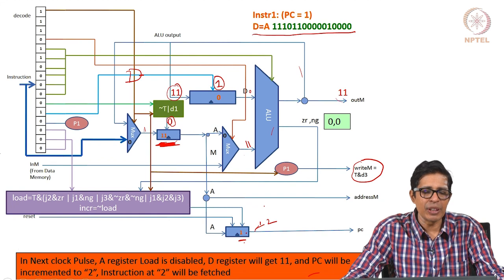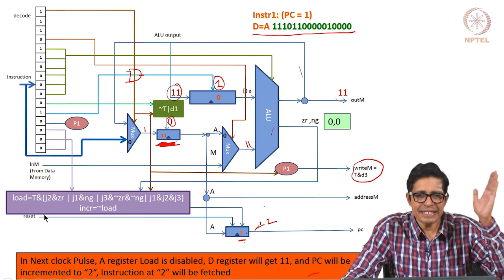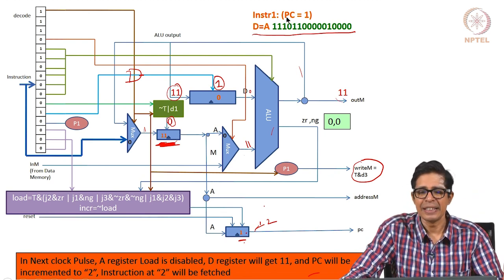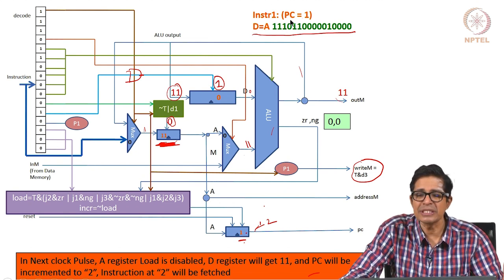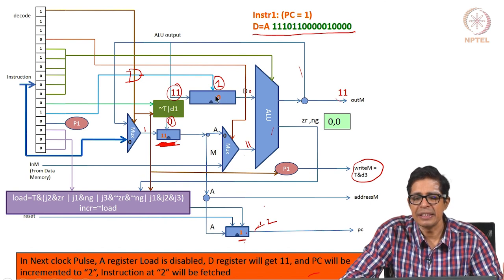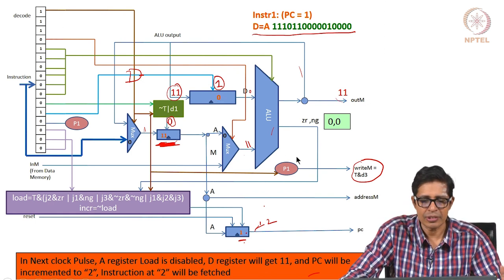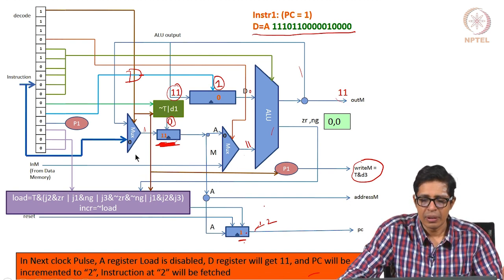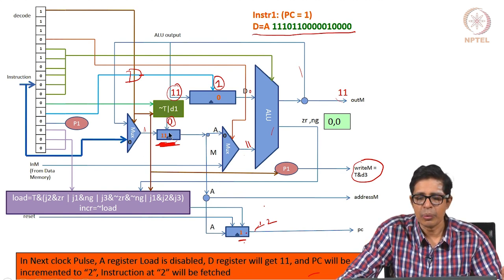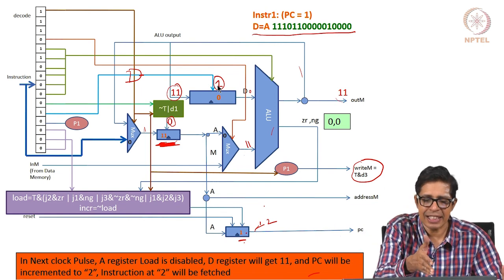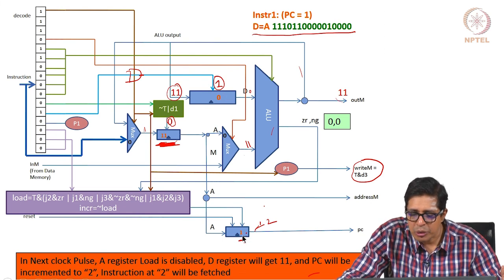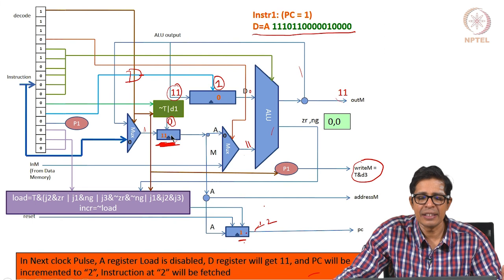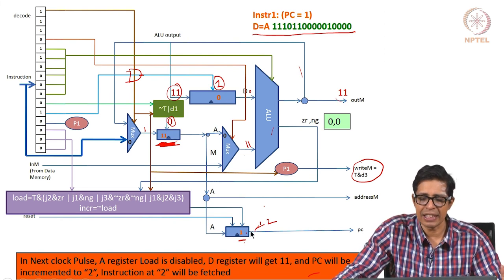PC is now fed back into memory. On the next tick, instruction 1 is fetched: D = A. Whatever is in the A register moves to the D register. This is a C-type instruction. At the tock: D should get 11 and PC should increment to 2. Nothing should happen to memory and nothing to the A register — only the D register and PC change.